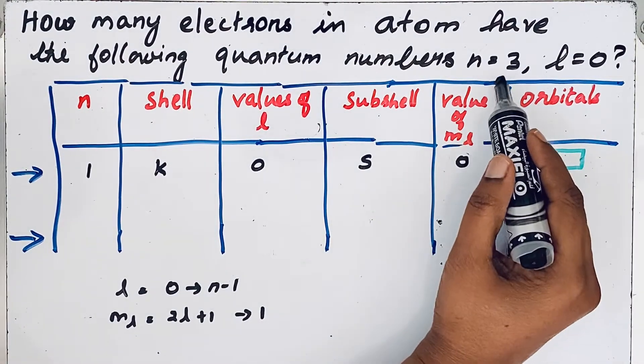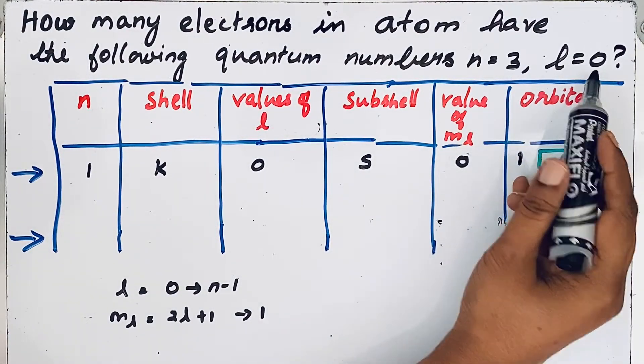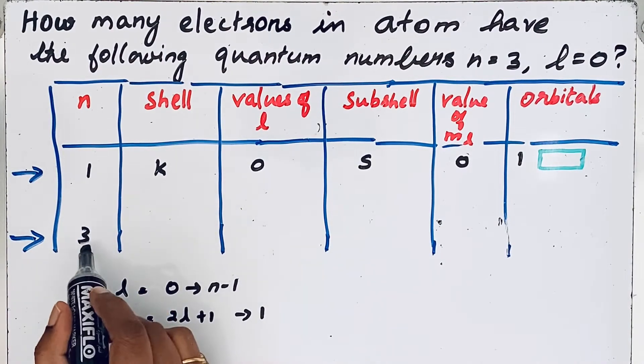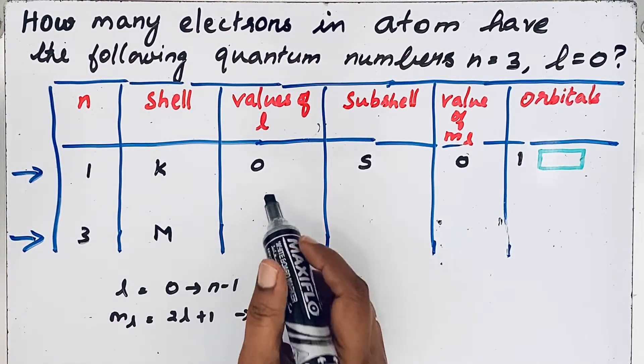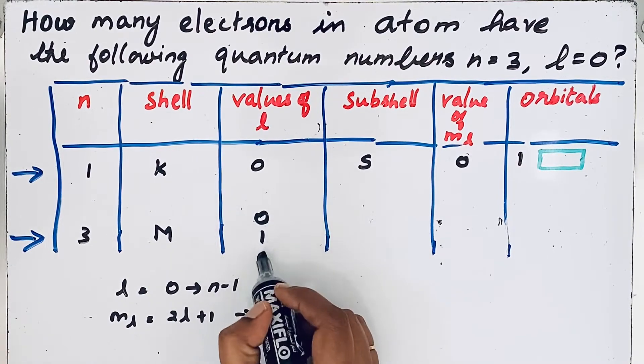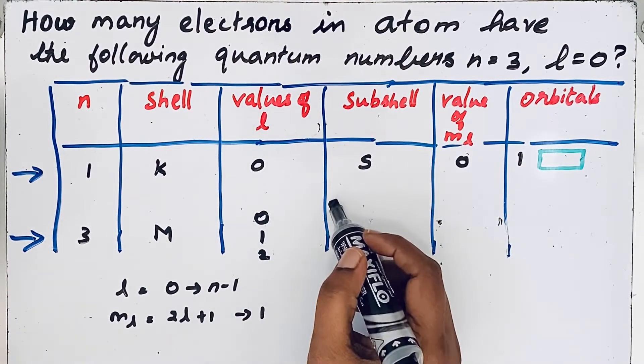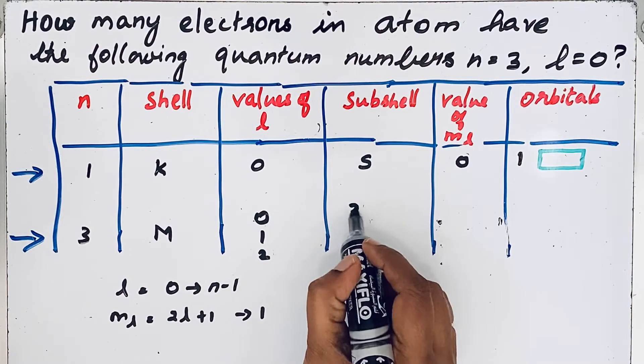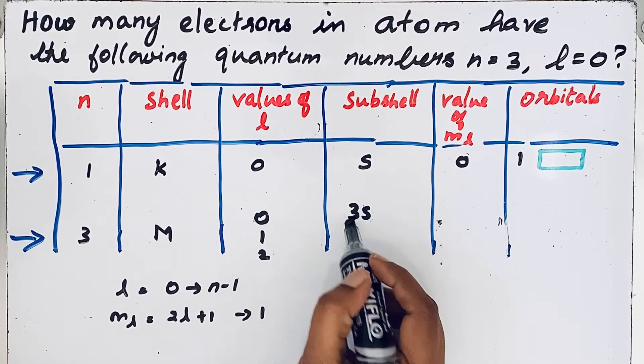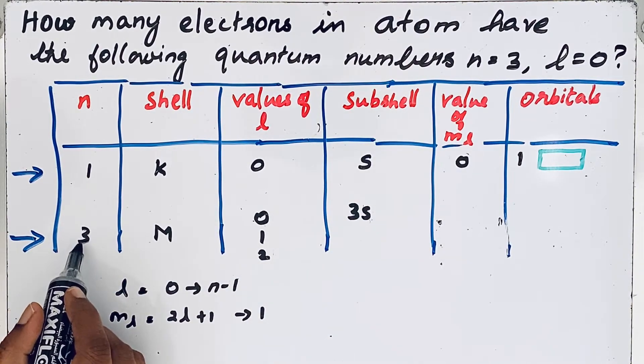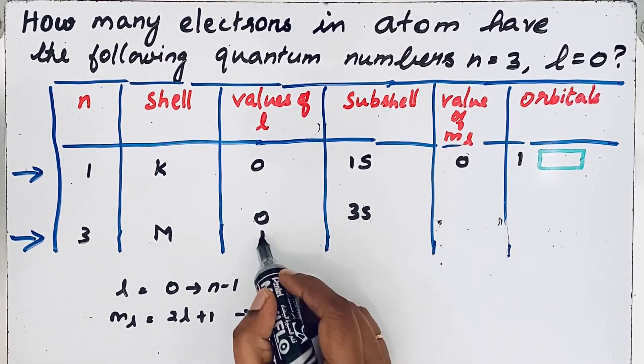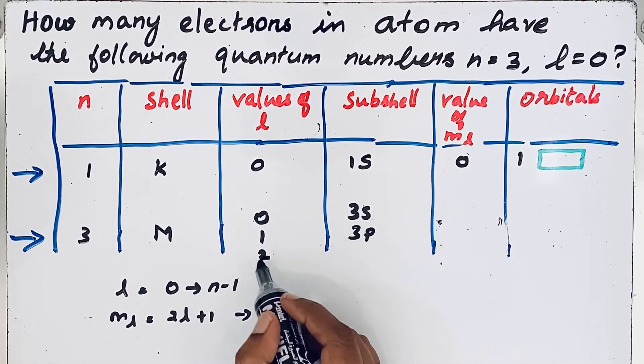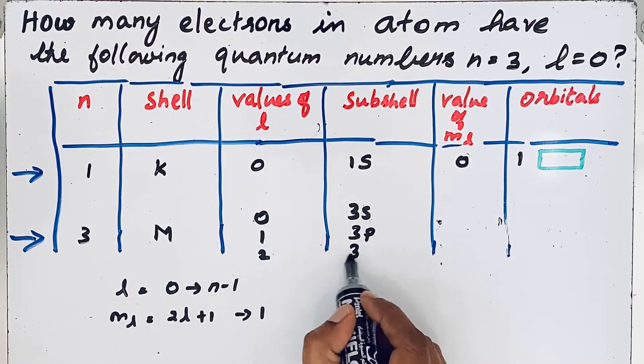Here they ask n equals 3 and l equals 0. If n equals 3, the shell is M shell and the values of l are 0, 1, 2, and the shell is 3s. Here 3 stands for principal quantum number n. So here we should write 1s.